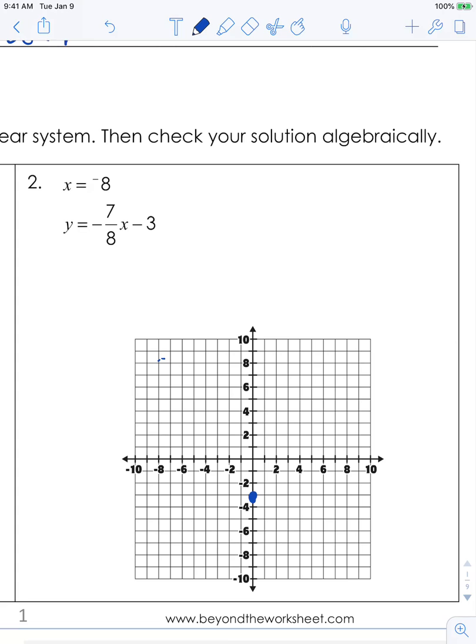Next equation, you have x is equal to negative 8. So we are going to just have a vertical line that runs through negative 8 on the x-axis.